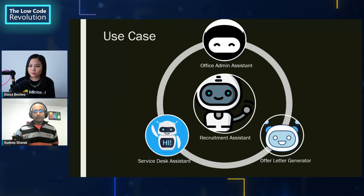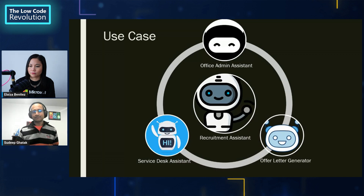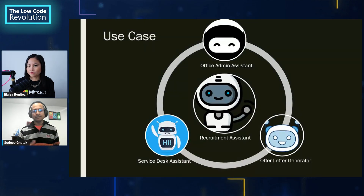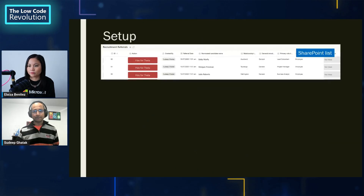Welcome to the agentic world. Tasks are handled by specialized AI agents, and each agent is an expert in one single area — there are no super agents. The real power comes from how these agents collaborate and pass information between one another.